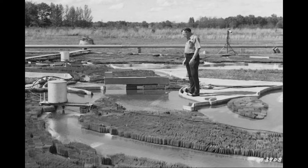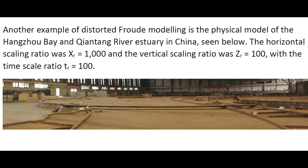Altogether, the physical model size was about 1.5 kilometers by 2 kilometers. Another example of distorted Froude modeling is the physical model of the Hangzhou Bay and Qiantang River Estuary in China, seen below. The horizontal scaling ratio was XR equals 1,000, the vertical scaling ratio was ZR equals 100, and the time scaling ratio was 100.